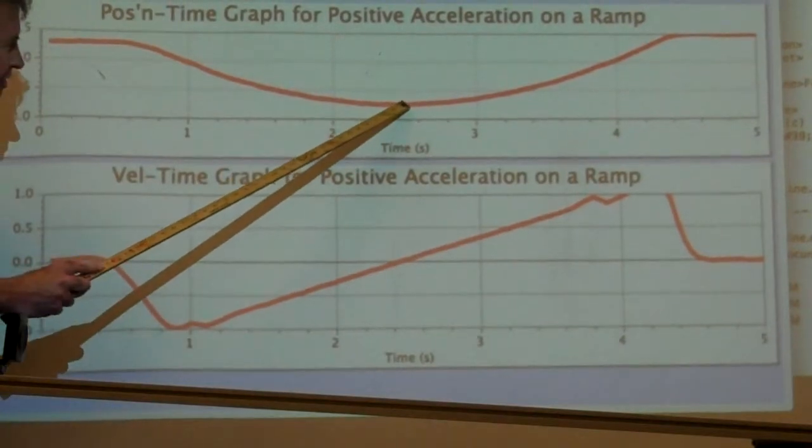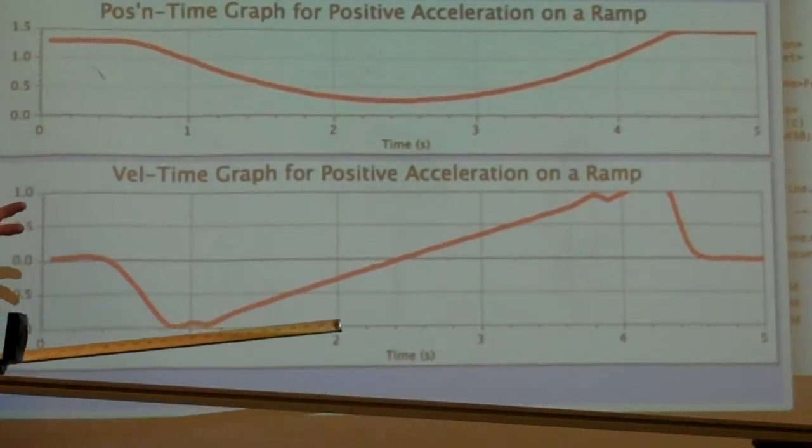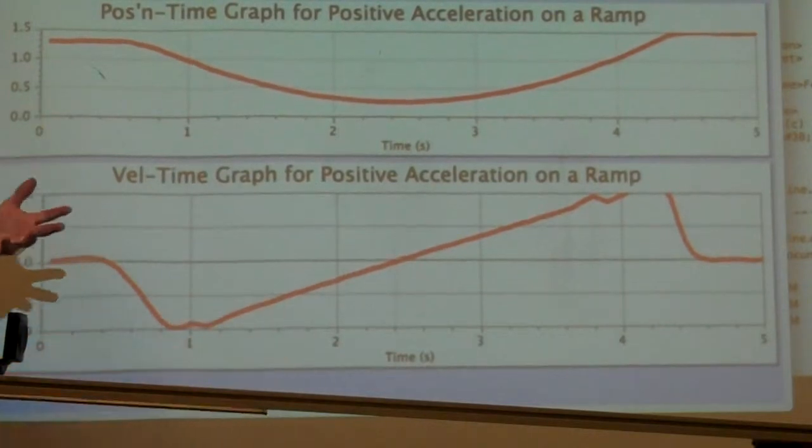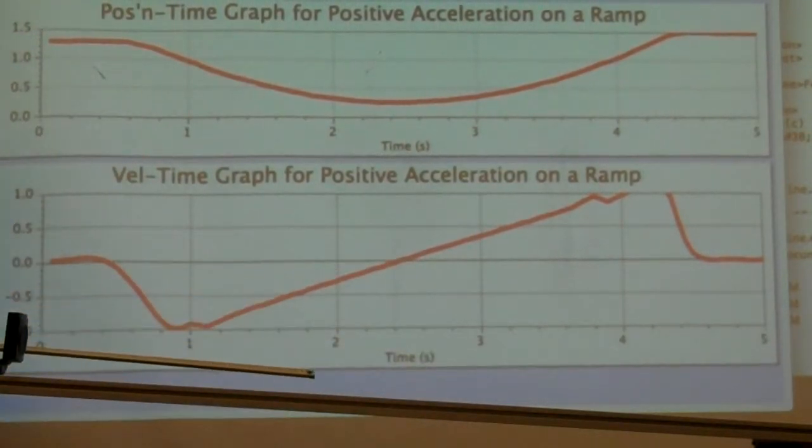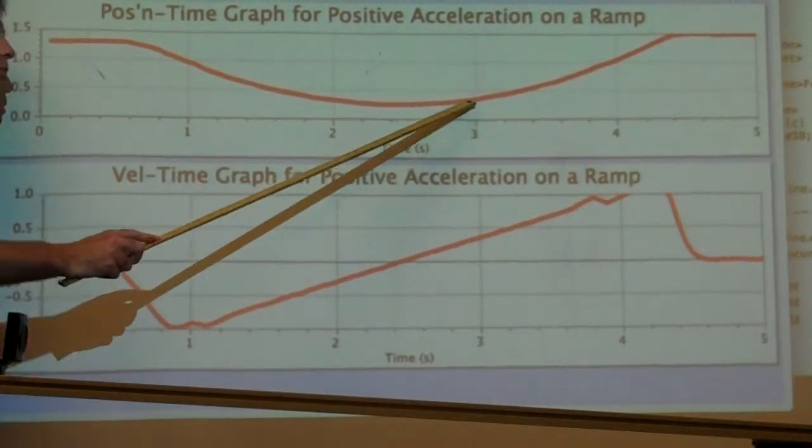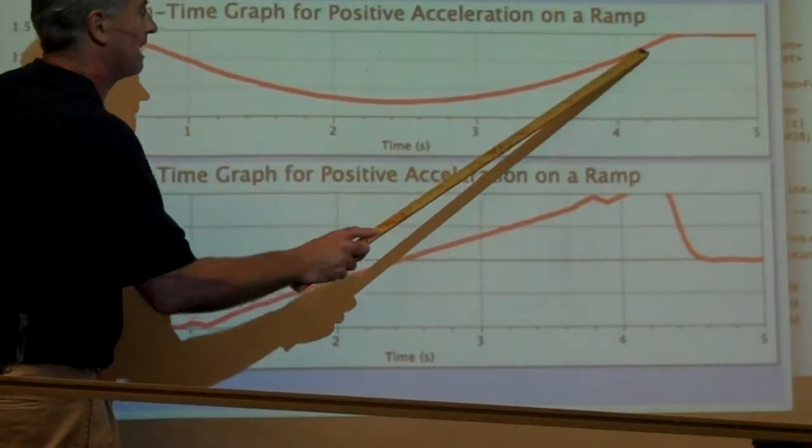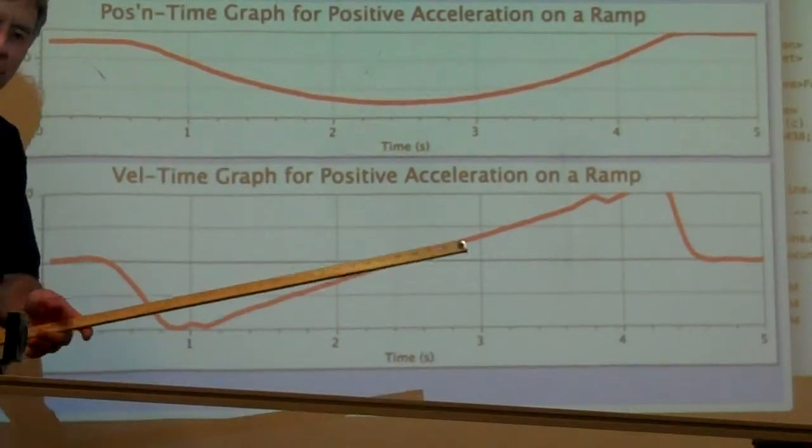At this point, the slope is zero. The cart has reached its furthest, its closest distance to the motion detector on this end. And it stopped moving upwards. It's beginning now to move down the ramp. And so as the cart moves back down the ramp, that would be in your field of view, back to the right, there's a positive velocity.